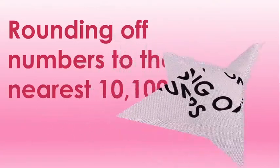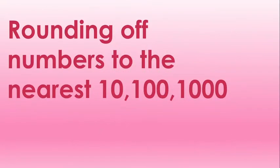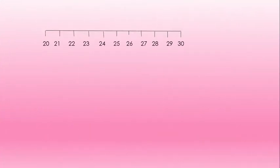Today we will study rounding off numbers to the nearest ten, hundred and thousand. Let's draw a number line and locate these numbers. I have written here 20 to 30 numbers. Now see the number 22 and 28. Observe carefully the distance between 22 and 20, and 22 and 30. Since 22 is nearer to 20, we round off 22 to 20.